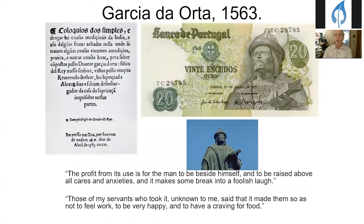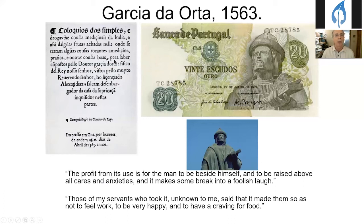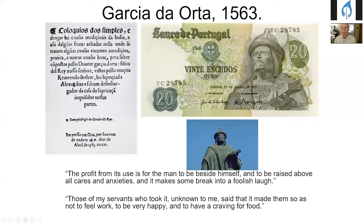Some centuries later, Garcia da Orta, from a Spanish Jewish family that fled to Portugal, went to India in the service of the royal family and provided the first description of Indian hemp in a modern European language — specifically Portuguese. He noted that the profit from its use is for the man to be beside himself and raised above all cares and anxieties, and it makes some break into a foolish laugh. His servants who took it unknown to him said it made them not feel work, be very happy, and have a craving for food — clearly appropriate descriptions of the psychoactive effects of THC.